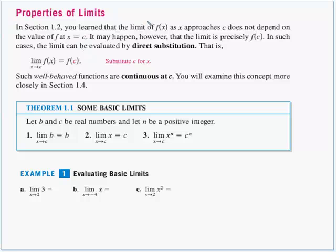In the last section, you learned that the limit of a function f of x, as x approaches some number c, does not depend on the value of the function at that given point. It may happen, however, that the limit is precisely f of c. In such cases, the limit can be evaluated by direct substitution — that is, the limit as x approaches c of f of x equals f of c. Such well-behaved functions are continuous at point c, and we'll examine that concept more in the next section.